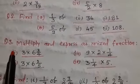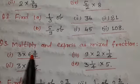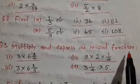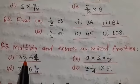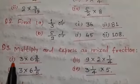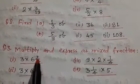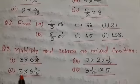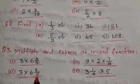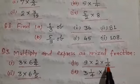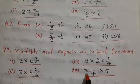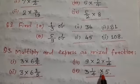Question number 3 is multiply and express as mixed fraction. Here fractions are given. First is 3 multiply 6 and 3 by 4. Second is 3 multiply 6 and 2 by 5. Third is 9 multiply 2 multiply 1 by 4. And fourth is 3 and 1 by 4 multiply 5.